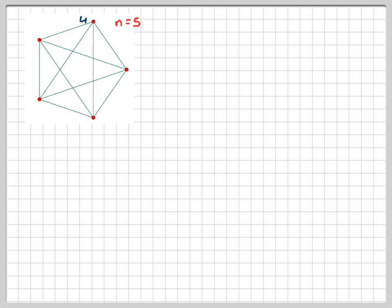N is 5, same idea, four. Four is one less than the number of lines. You can see there are four lines going from that point. Three, two, one. And therefore the number of lines is going to be 4 plus 3 plus 2 plus 1, which is 10.